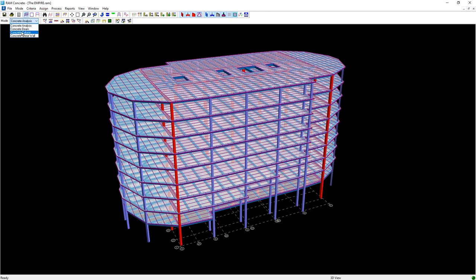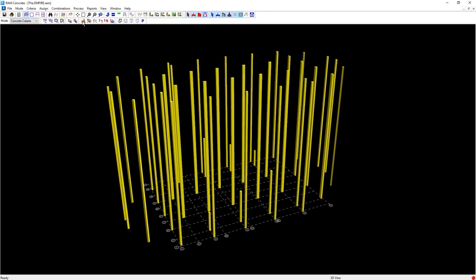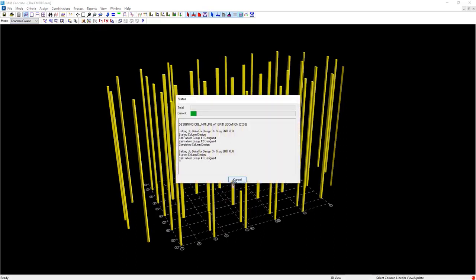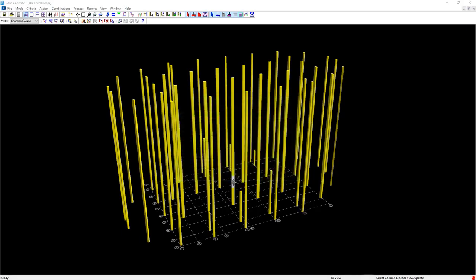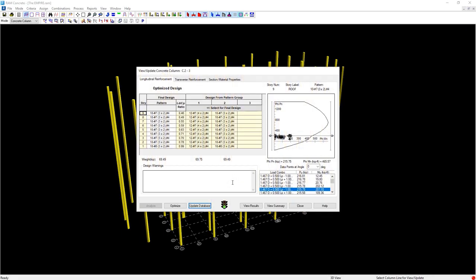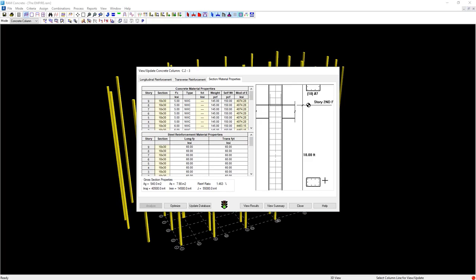With the analysis complete, we can proceed to the concrete column design module, where we can select any column stack to be designed and viewed. In this case, the program selected 10 number 7 bars at the upper levels, and 10 number 8 bars at the lowest level, with the bar pattern shown here.